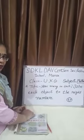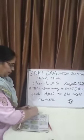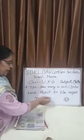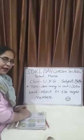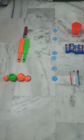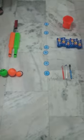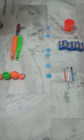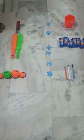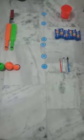I will show you some objects. We will join the objects by an activity. See — here are some objects. Now we will match these objects to the numbers.